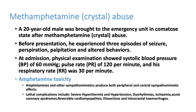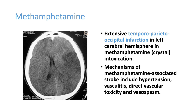A 20-year-old male was brought to the emergency unit in a comatose state after methamphetamine abuse. Before presentation he experienced three episodes of seizures, palpitations, and altered behavior. His systolic BP was 60, pulse rate 120, respiratory rate 30. CT scan shows extensive temporoparieto-occipital infarction. Mechanisms of methamphetamine-associated stroke include hypertension, vasculitis, direct vascular toxicity, and vasospasm — producing the stroke seen as dark areas on CT.